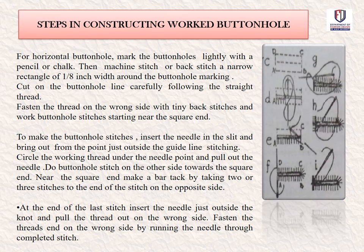Steps in constructing worked buttonholes: For horizontal buttonholes, mark the buttonholes lightly with a pencil or chalk. Then machine stitch or back stitch a narrow rectangle of about 1/8 inch width around the buttonhole marking. Cut on the buttonhole line carefully, following the straight thread. Fasten the thread on the wrong side with tiny back stitches and work buttonhole stitches starting near the square ends. Insert the needle in the slit and bring it out just outside the guideline stitching, then circle the working thread under the needle point and pull out the needle.